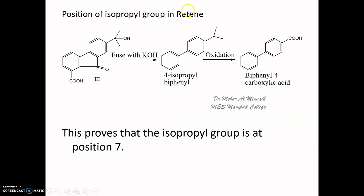The structure of retene was thus established. The position of the isopropyl group on retene was further confirmed: compound 3 was fused with KOH to give 4-isopropyl biphenyl, which on oxidation gave biphenyl-4-carboxylic acid. The formation of biphenyl-4-carboxylic acid indicates that an isopropyl group is on carbon 4 of biphenyl, corresponding to carbon 7 of retene. Hence the isopropyl group in retene is confirmed at carbon 7.